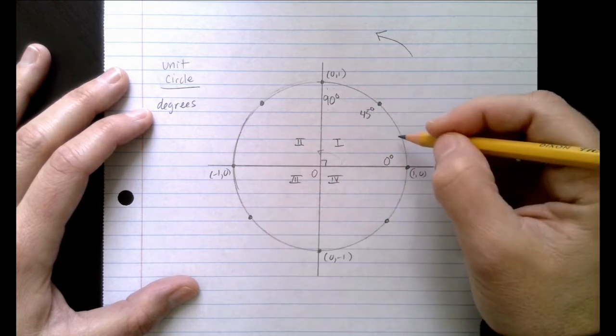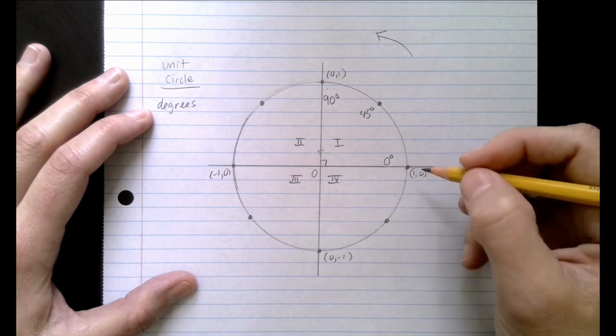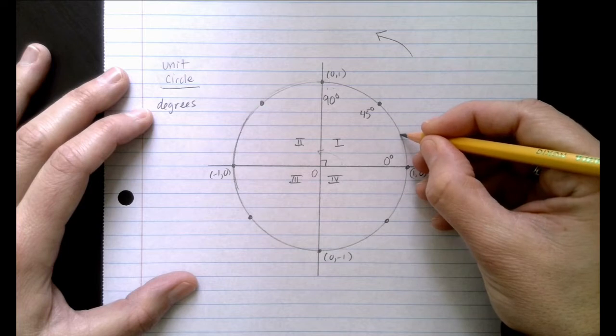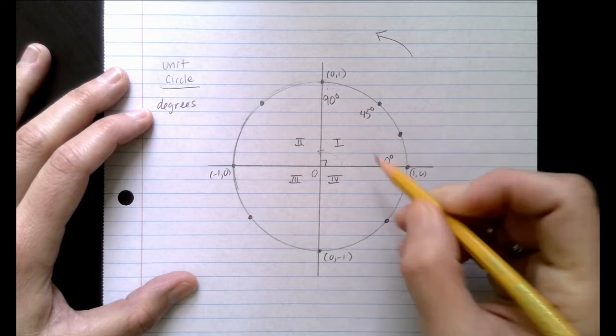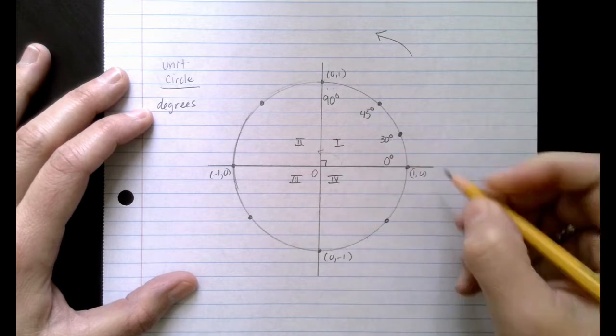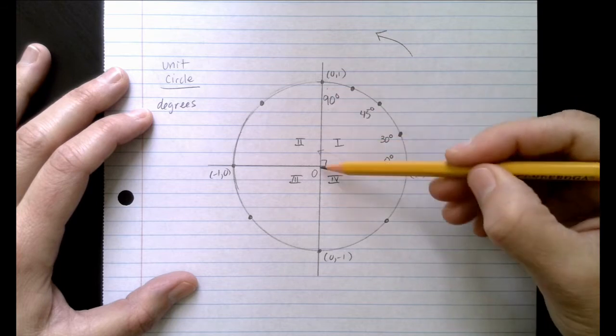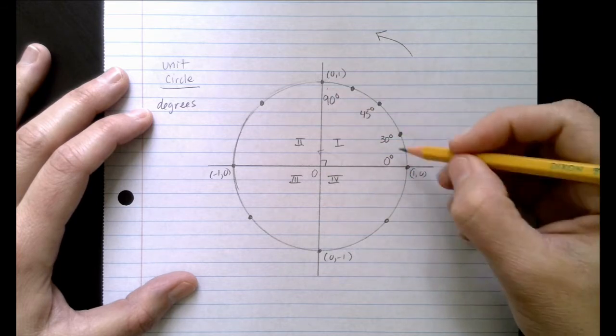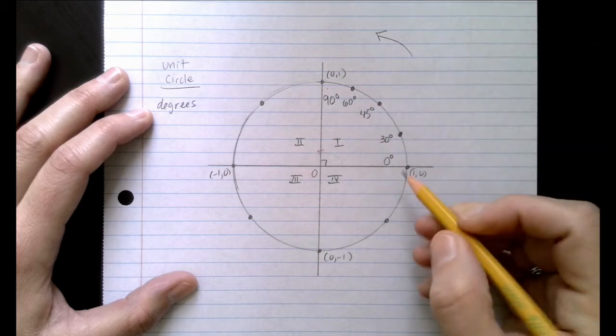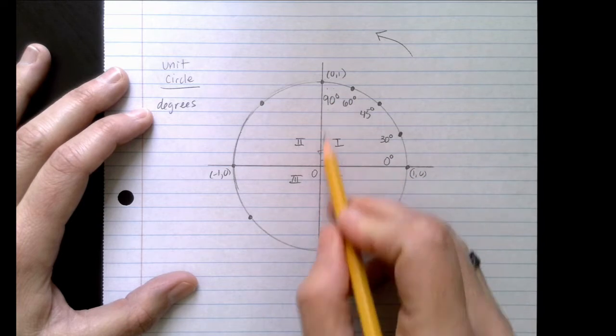There's two other angles that I want to introduce you to in quadrant one that are important for building our unit circle. The first one is if we take this piece of the unit circle and we divide it into thirds. So what is 90 degrees divided by three? The other angle is up here. If I take two thirds of this, so if one third is 30 degrees, then two thirds is 60 degrees. I now have 1, 2, 3, 4, 5, all five parts in quadrant one.